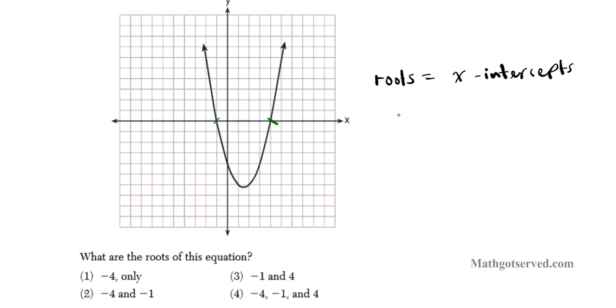So your roots are negative 1 and 4. Remember, this value right here, 1, 2, 3, negative 4, does not qualify as a root. It is a y-intercept. The y-intercept is not a root. So don't get tempted to pick option number 4. That's wrong. The correct answer is option number 3.